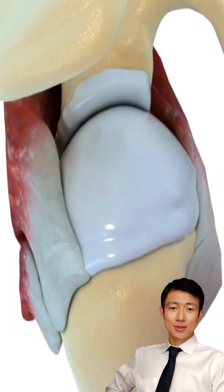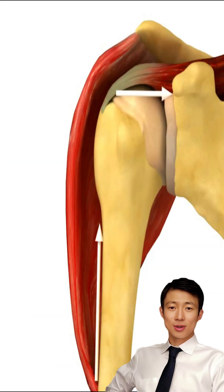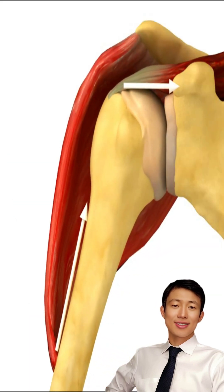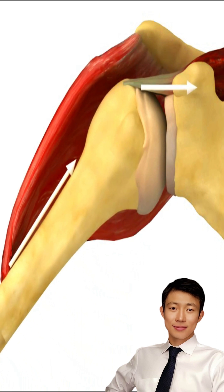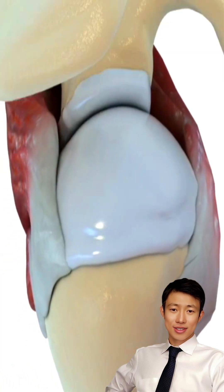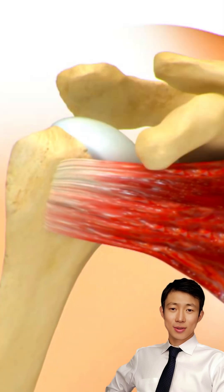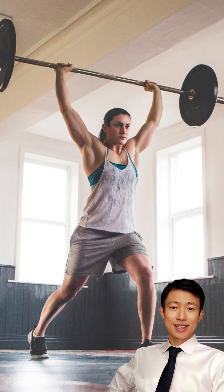Functional stability arises from balanced force couples. In the coronal plane, the deltoid and supraspinatus act synergistically during abduction. In the transverse plane, the subscapularis and infraspinatus counterbalance each other to prevent humeral head translation. Overhead movements, especially when loaded and repetitive, increase the risk of impingement and injury.